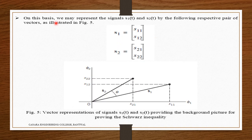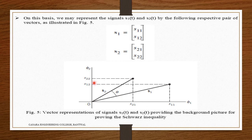On this basis we represent signals S1(t) and S2(t) by the following respective pair of vectors as illustrated in figure 5. We can see S11, S12, S21, and S22 on the domain of pi_1 and pi_2. This is the vector representation of S1(t) and S2(t), providing the background picture for proving the Schwarz inequality. S1 = (S11, S12), S2 = (S21, S22).